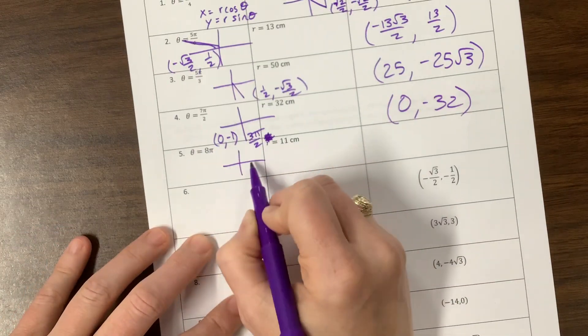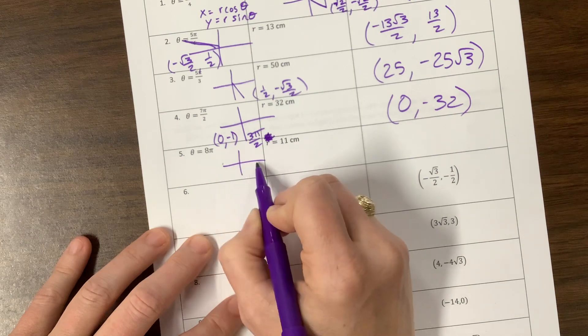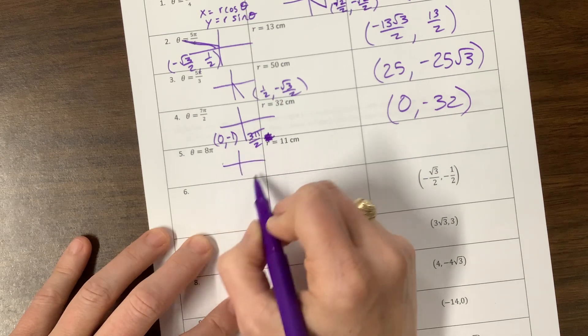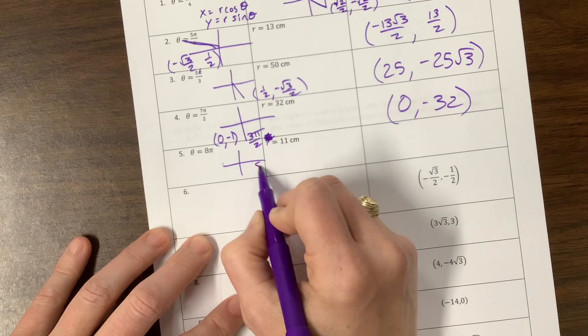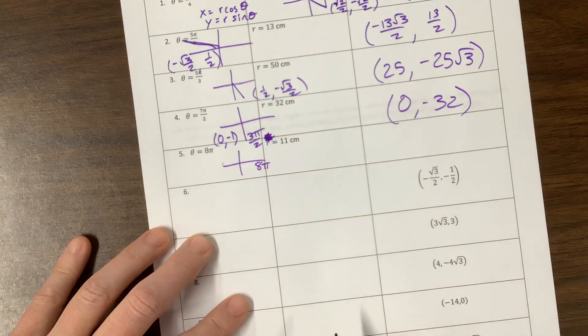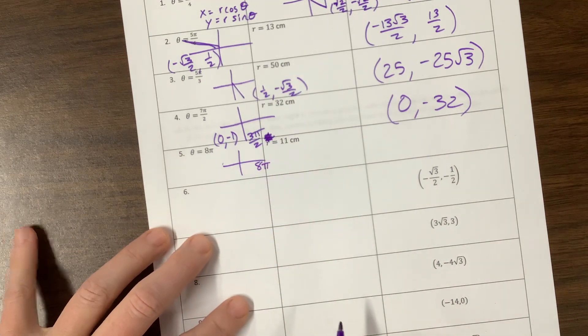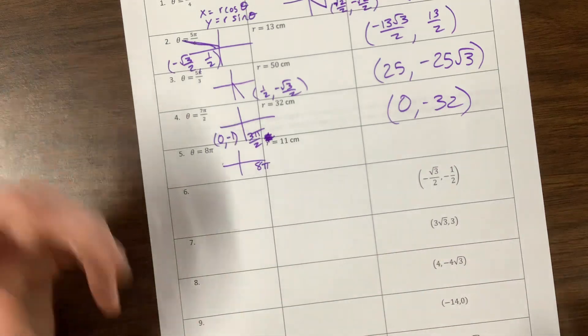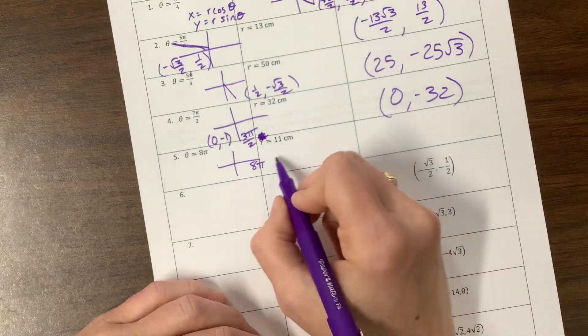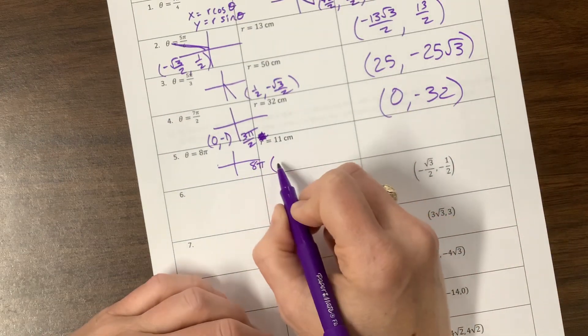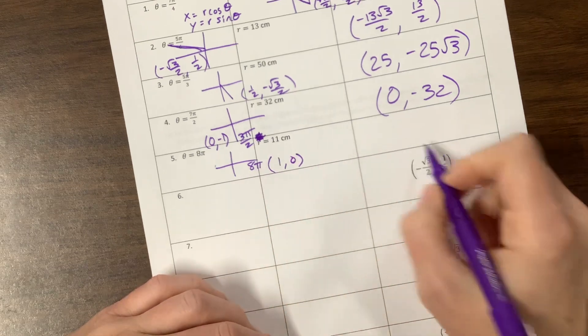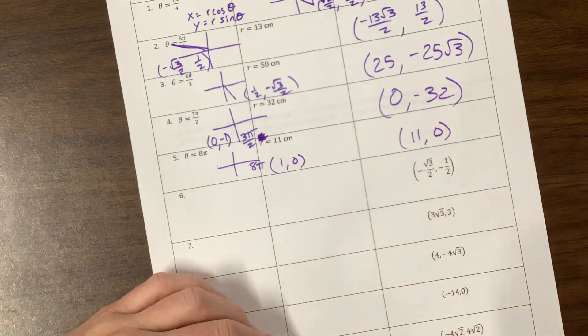8π, where is 8π? This is 0, π, 2π, 3π, 4π, 5π, 6π, 7π, 8π. Hopefully you recognize that 8π is coterminal. It's an even value of π, so it's going to be over there. Its coordinates initially, without changing the radius, are 1, 0. Now we change our radius, and we're at 11, 0.